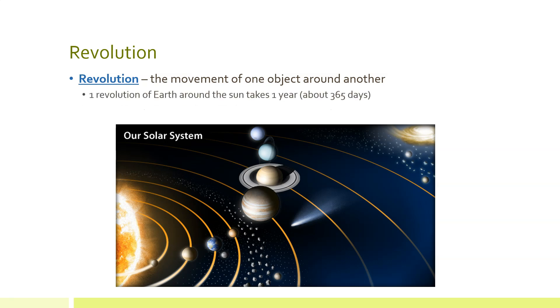One revolution of Earth around the sun is called a year. That is where our year comes from. It takes approximately 365 days for Earth to make one trip all the way around the sun.